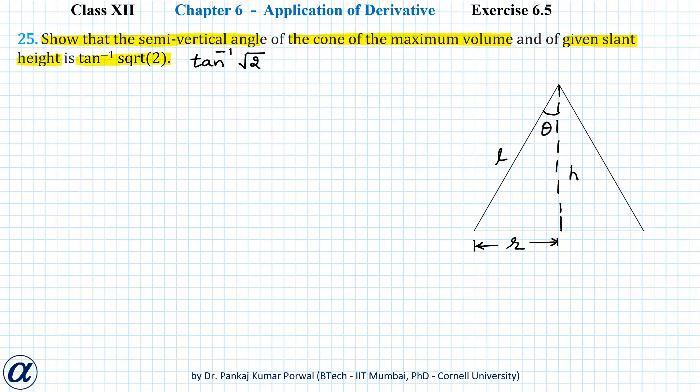Here I have a cone with base radius r, height h, slant height l, and semi-vertex angle theta. In this, l is given. From Pythagoras theorem, I can write l squared equals r squared plus h squared.